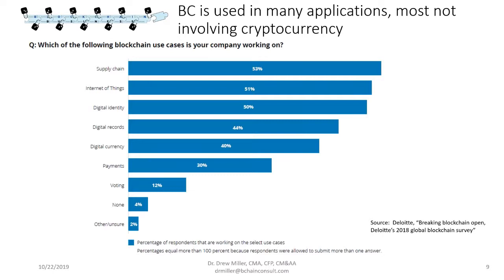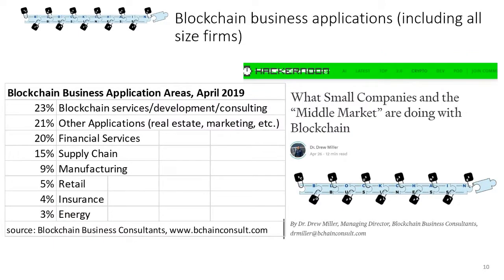In business applications, blockchain is largely about having shared sources of data that are reliable and trustworthy because they're maintained on a blockchain, plus the smart contract advantages and other applications like payments and voting. Our firm tracks blockchain applications across all types of firms including small and middle market companies. Blockchain is largely being used by startups and the Fortune 1000, but what's really missing is the middle market — companies around $100 million in size are just not doing much in blockchain right now.